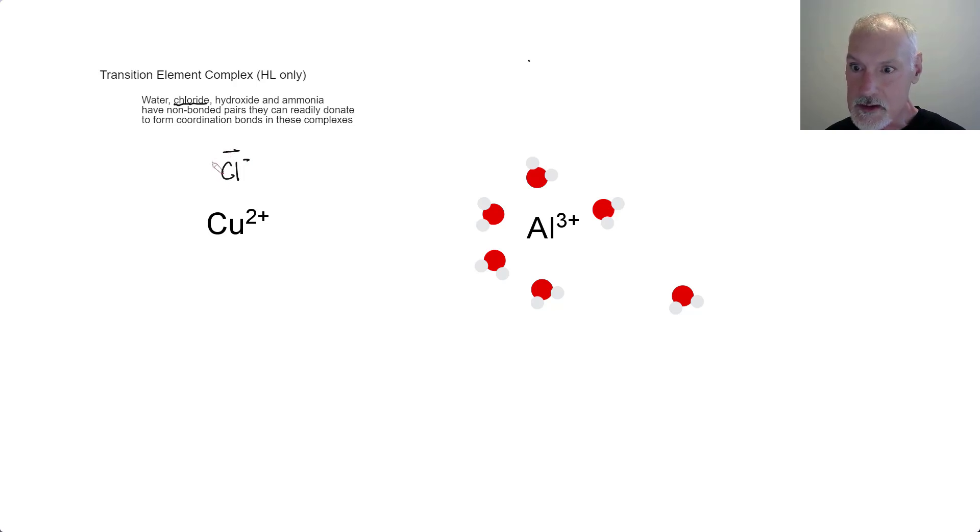So I'm going to show those as lines. So there's the chlorine with its eight valence electrons. It is capable of donating that pair to that copper.